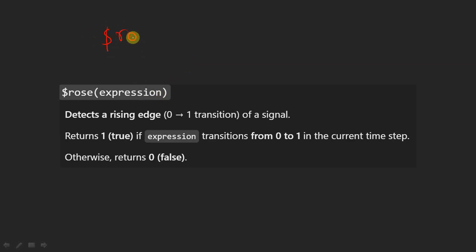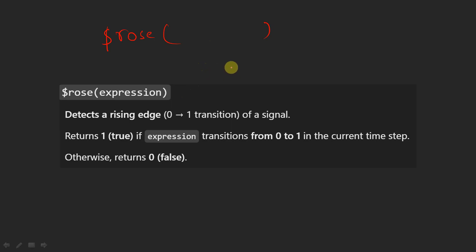We will start with the first system function, which is known as `$rose`. The argument is one expression. Basically, `$rose` will return true if the signal has changed from zero to one and remains one at the current evaluation point — that is, if it detects a rising edge from zero to one at the current evaluation point.